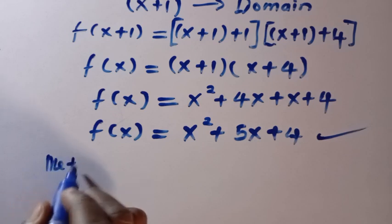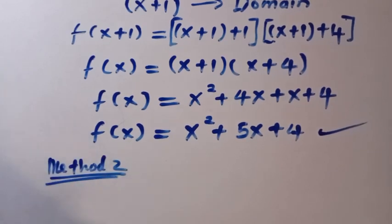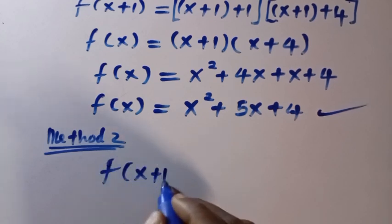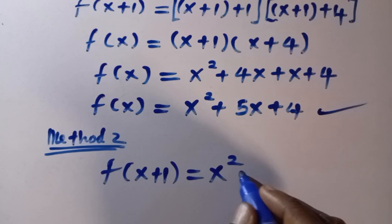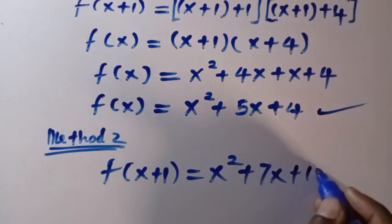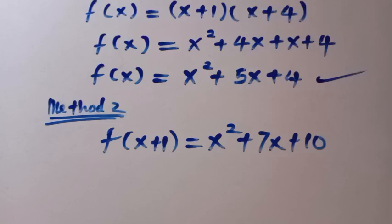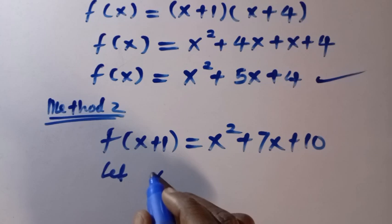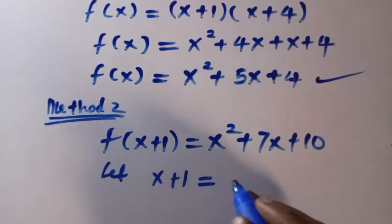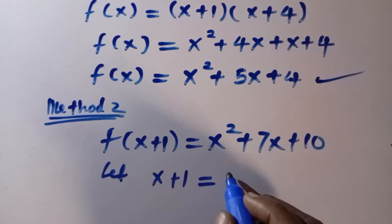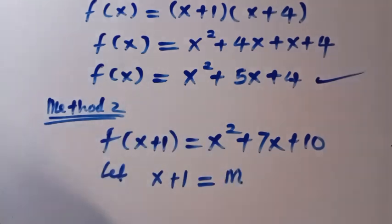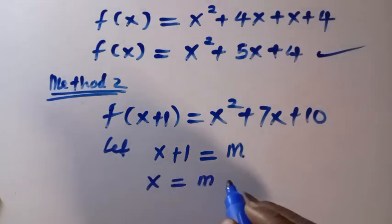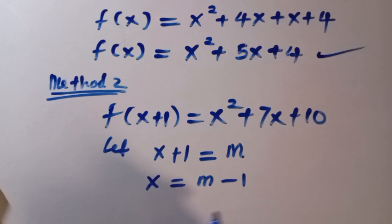so we consider this as method 2, so we are giving f of x plus 1 equals x squared plus 7x plus 10. Then, we let x plus 1, suppose we let x plus 1 equals another letter, so if I choose, so let's say I choose m, that is, we have to make x the subject of the formula here, x equals m minus 1, so we transfer one to other side.